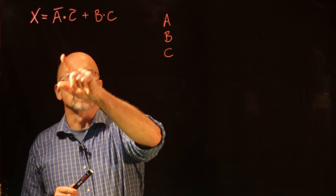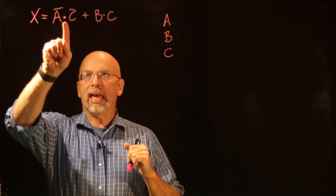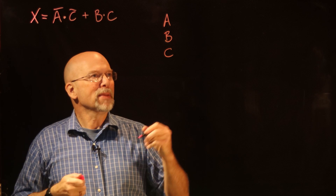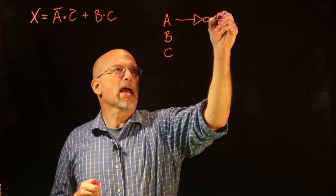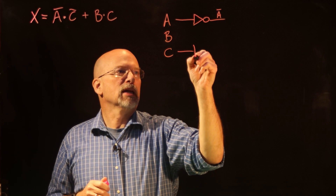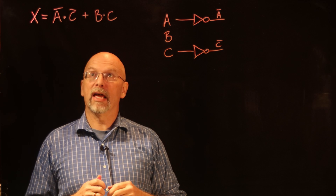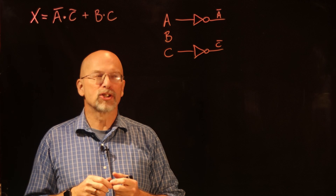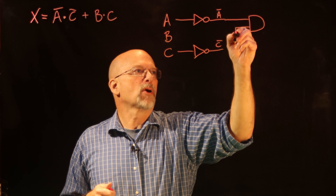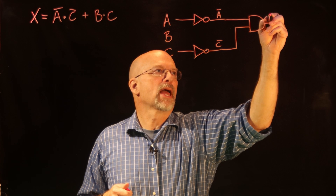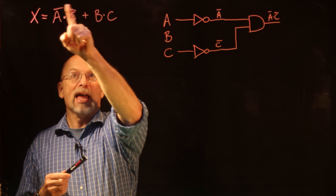What's the very first thing we'd do? Looking at this product here — ANDing the inverse of A with the inverse of C — that means I need to run A through an inverter to get Ā, and I also need to run C through an inverter to get C̄. Now that I have Ā and C̄ available, I can AND them together. So I take an AND gate, run Ā in and C̄ in. At this point I have Ā ANDed with C̄.